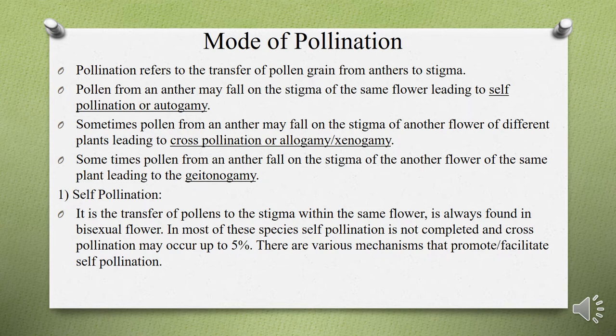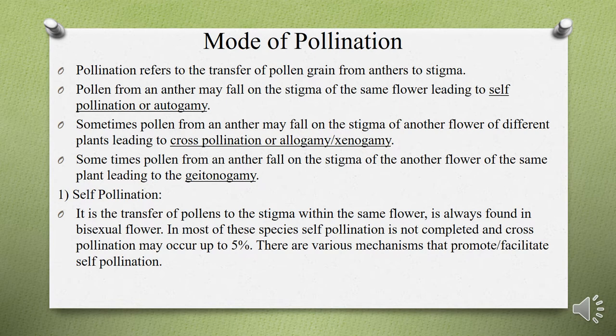Now let's talk about the different modes of pollination. Pollination is the transfer of pollen grains from anthers to stigma. There are two types: self-pollination, also known as autogamy, and cross-pollination, also known as allogamy. Self-pollination is the transfer of pollens from an anther to the stigma of the same flower. Cross-pollination is the transfer of pollen from an anther to the stigma of another flower of a different plant. When pollen from an anther falls on the stigma of another flower of the same plant, that is known as geitonogamy, a subtype of self-pollination.